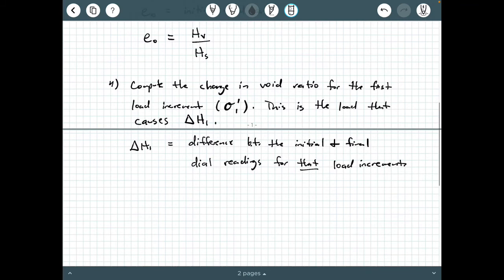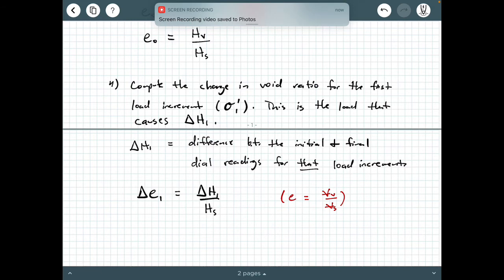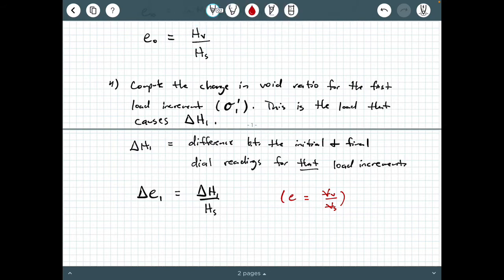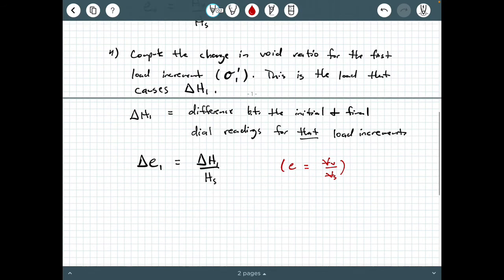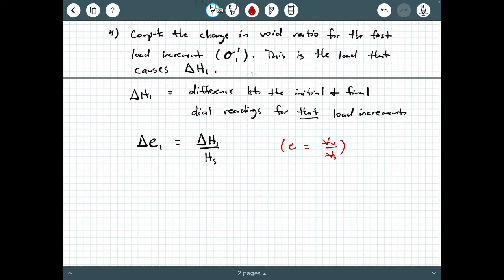The way we calculate the change in void ratio is delta E1 equals delta H1 divided by H sub S. Recall that the definition of void ratio is volume of voids over volume of soil solids. But remember, we are talking about a consolidation test specimen. The diameter is held constant so you don't have the opportunity to develop a Poisson effect. So really what's changing is the height.